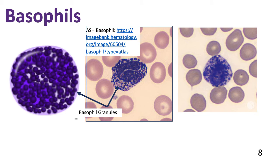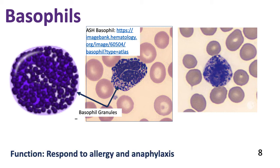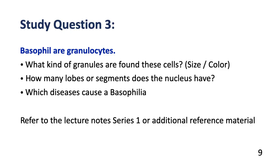The third class of leukocytes is the basophils. They have large basophilic granules that are deep blue or violet in color, and they usually obliterate or obscure the nucleus, which is also bilobbed. The function of basophils is to respond to allergies or anaphylaxis. An increase in number of basophils is known as basophilia. There are also study questions on slide number nine.